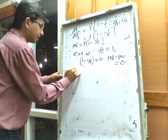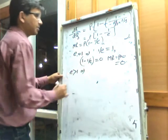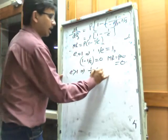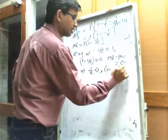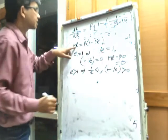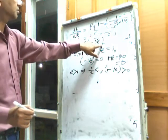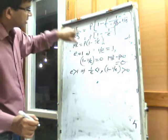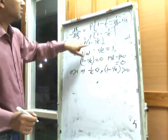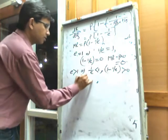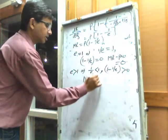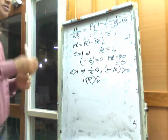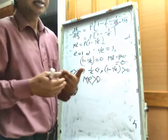If e is greater than 1, then 1/e is less than 1, so 1 minus 1/e is greater than 0. Marginal revenue equals p times (1 minus 1/e). Since p is always positive and (1 minus 1/e) is positive, marginal revenue is positive. So if price elasticity of demand is greater than 1, when output or sales increase, total revenue will increase.